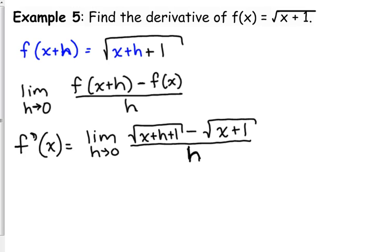What do we do when we have square roots that give us 0 over 0? Multiply by the conjugate. I trained y'all well.